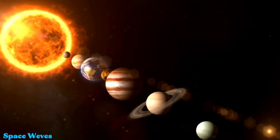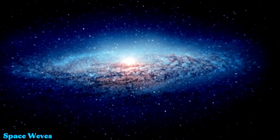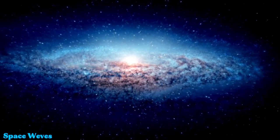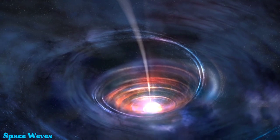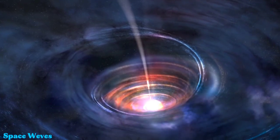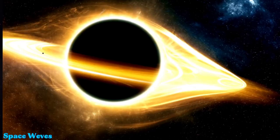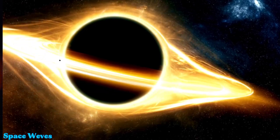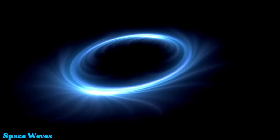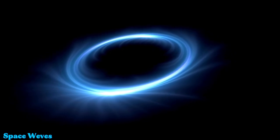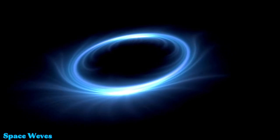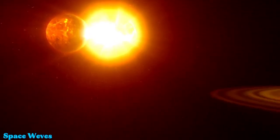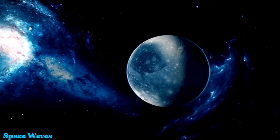As a red supergiant, Betelgeuse is one of the largest and most massive kinds of stars. Its recent erratic fluctuations in brightness have sparked theories that it is preparing for a supernova. When a star like Betelgeuse reaches the end of its life, its core collapses under its own gravity, leading to a massive blast that releases a huge amount of energy, radiation, and stellar material into space.